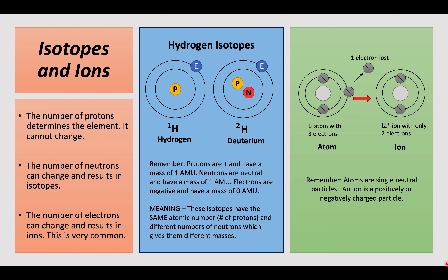The number of protons determines the element — all atoms with six protons are carbon atoms, and carbon has an atomic number of six. An isotope is one of two or more species of atoms of a chemical element with the same atomic number and same position on the periodic table, nearly identical chemical behavior, but a different atomic mass due to different numbers of neutrons, and often different physical properties. Every chemical element has one or more isotopes. An ion is an atom or molecule with a net electric charge due to the loss or gain of one or more electrons, causing a net positive or negative charge.